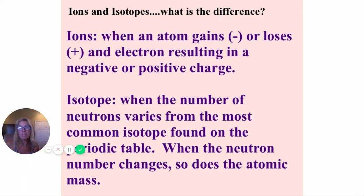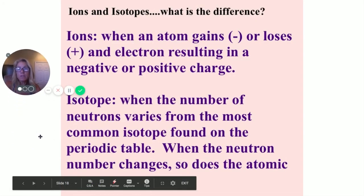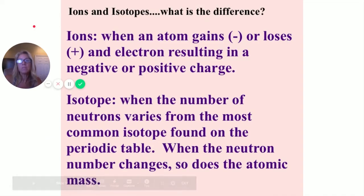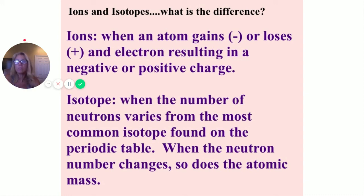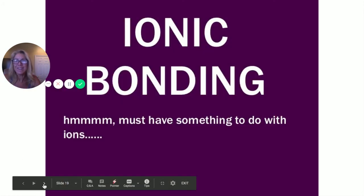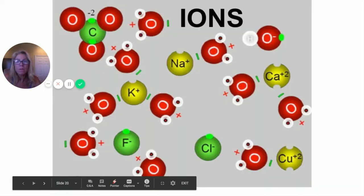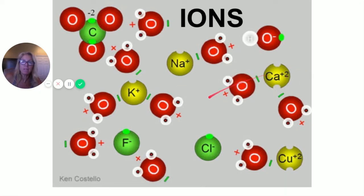Let's review ions versus isotopes. An ion is when you gain or lose an electron, resulting in a negative or positive charge. An isotope is where the number of neutrons varies, which changes the atomic mass. Now for ionic bonds: sodium has lost one electron, calcium has lost two — that's why they have positive charges. Chlorine has gained an electron — that's why it has a negative charge. These are ions.